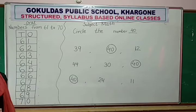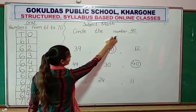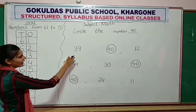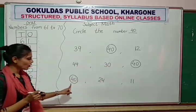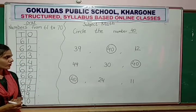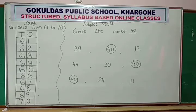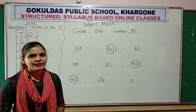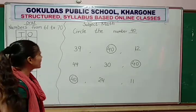Write on your notebook these activities. First write down the heading, then write all the numbers, then find out where is 40 and circle the number 40. If you want, you take a screenshot and write on your notebook. All are writing.